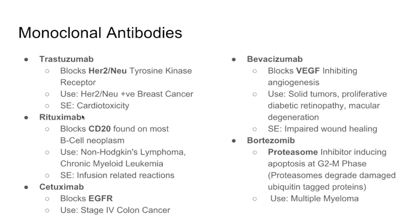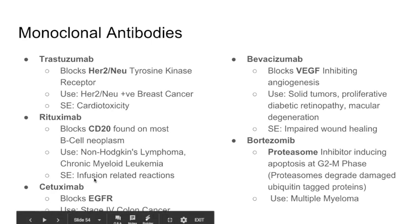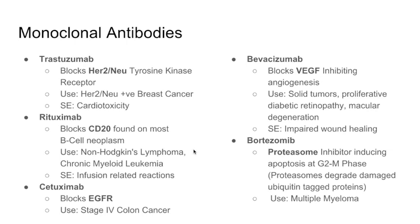Rituximab blocks CD20, which is found on all B cells (B cells have CD19 and CD20). Because B cells can undergo neoplasms such as non-Hodgkin's lymphoma, rituximab is used for non-Hodgkin's lymphoma and chronic lymphocytic leukemia. Side effects include infusion-related reactions such as hypertension and rash.